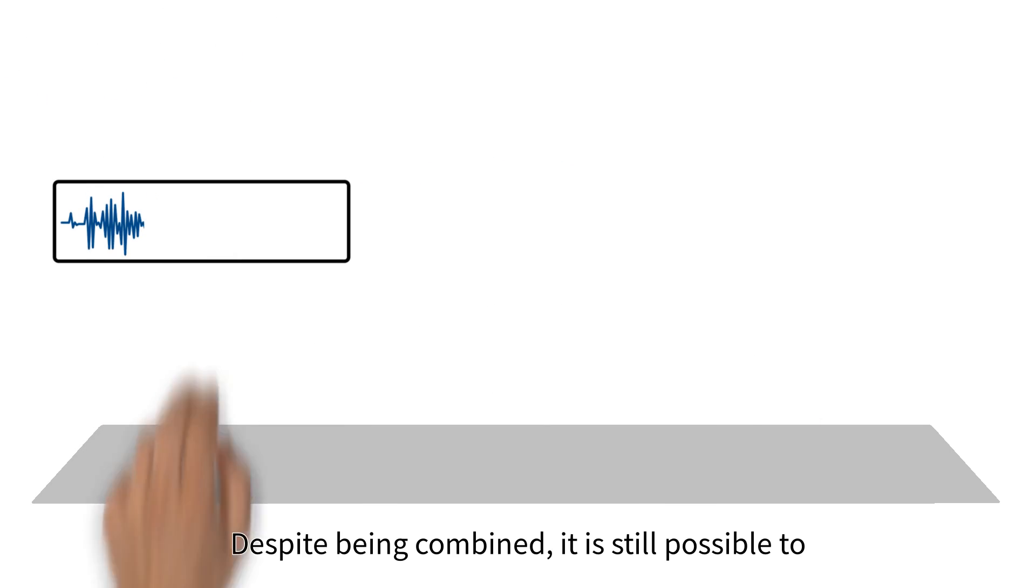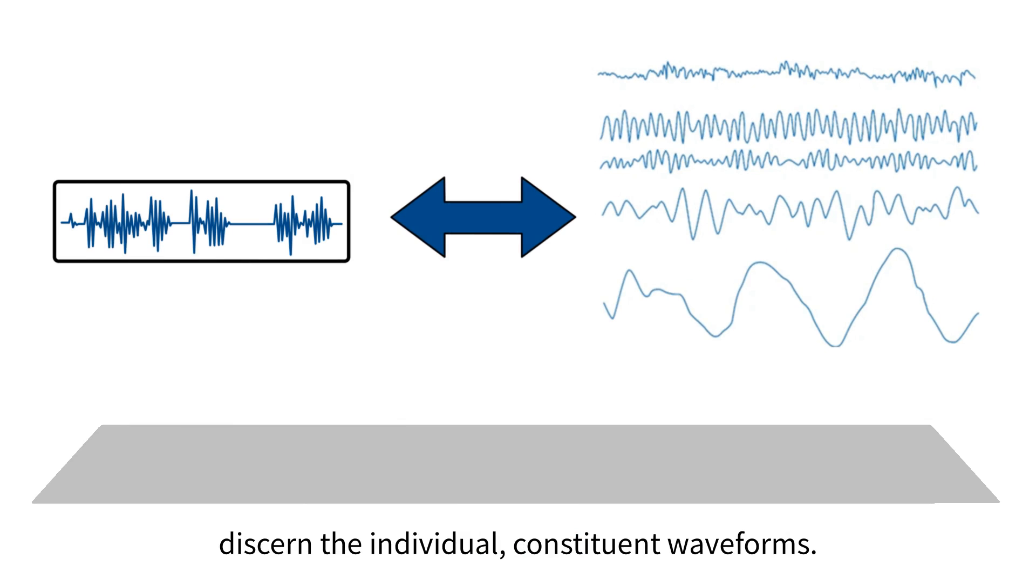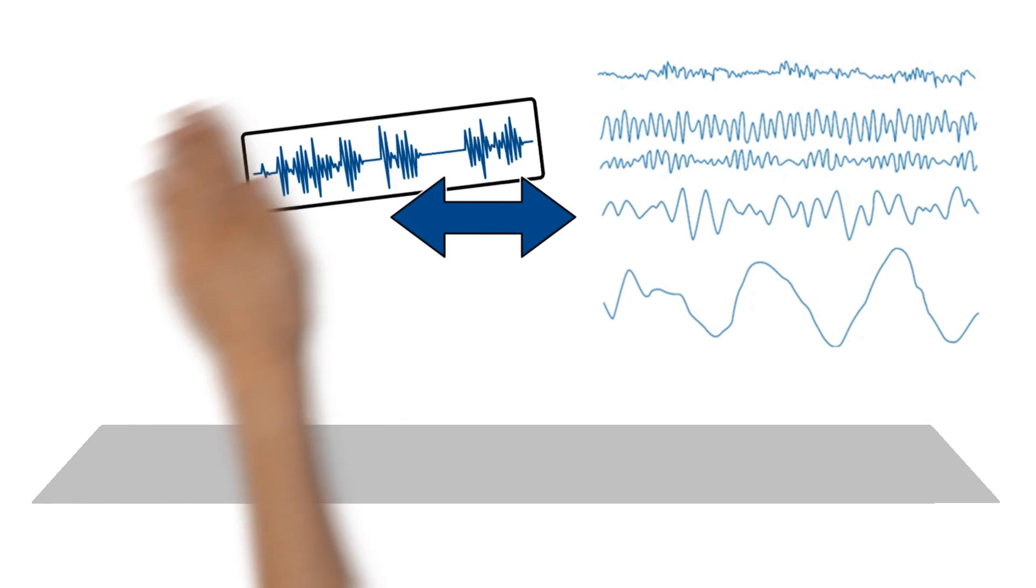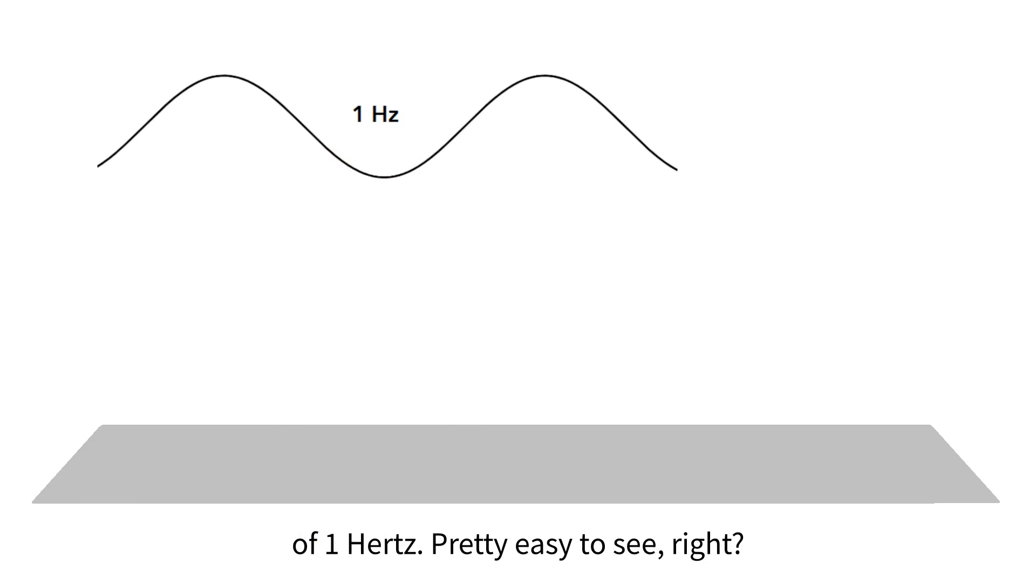Despite being combined, it is still possible to discern the individual constituent waveforms. For example, take this wave that has a frequency of 1 Hz. Pretty easy to see, right?